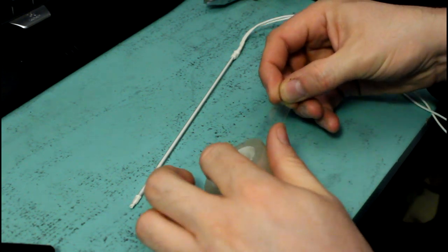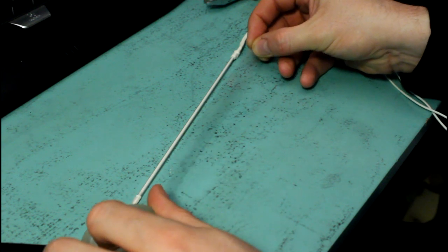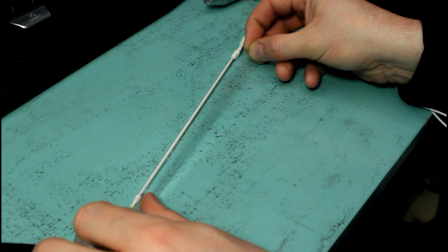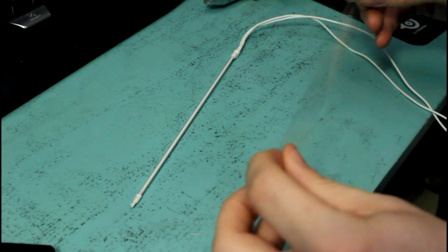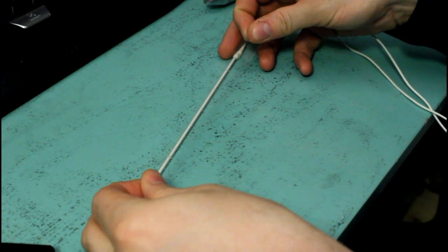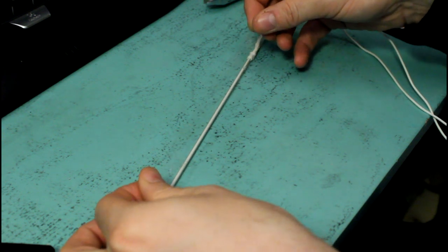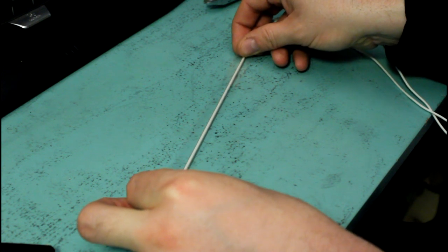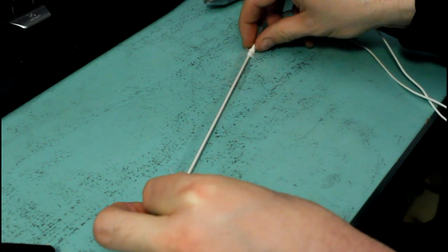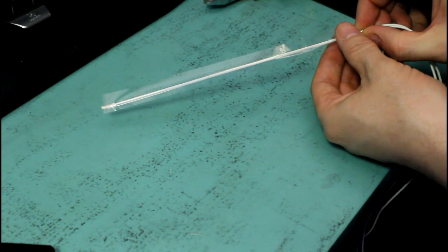You take the tape and you pull out a piece that's the same length as the CCFL. And you're slightly overlapping the live wire, as I said before, because you want to isolate all of it. And you apply it.